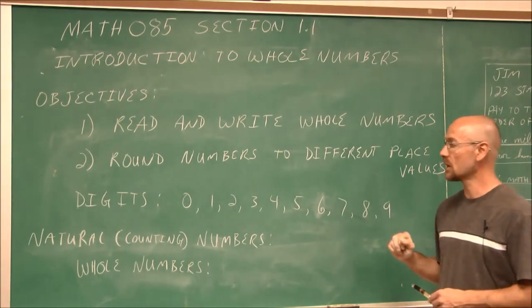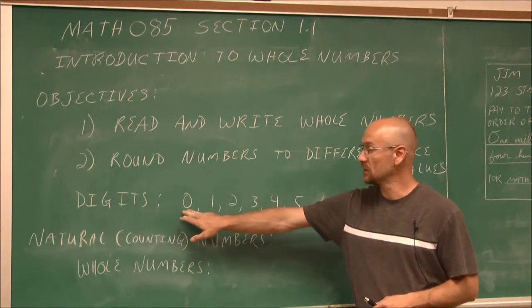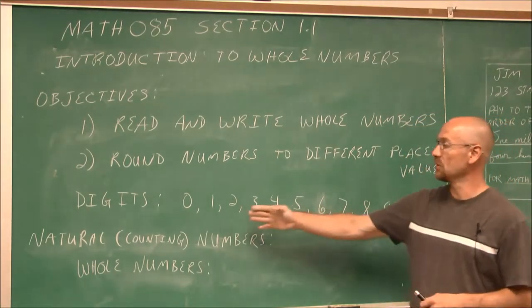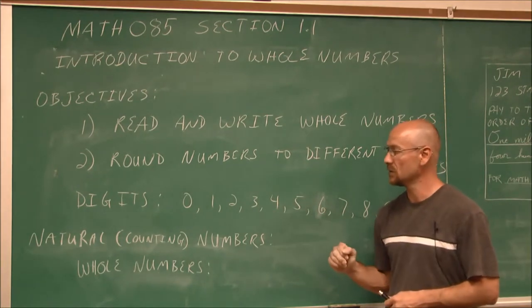So before we start, we're going to do a little bit of review. And the first is to identify our digits. Our digits are 0 through 9, and the values in between: 1, 2, 3, 4, 5, 6, 7, 8. All these digits. There are 10 digits.